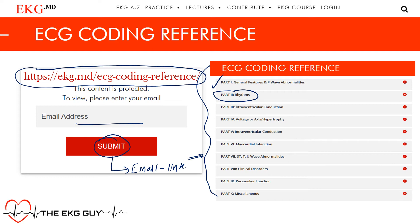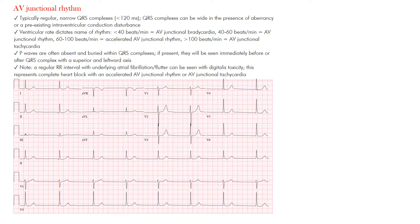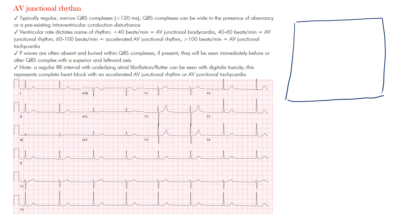We're in the AV junctional rhythms section — we've gone through different sinus rhythms and we'll now look at AV junctional rhythm in this lecture. Let's review our anatomy using box diagrams to simplify things. Imagine this is your heart: right atrium, left atrium, right ventricle, left ventricle. The sinus node sits high in the right atrium.